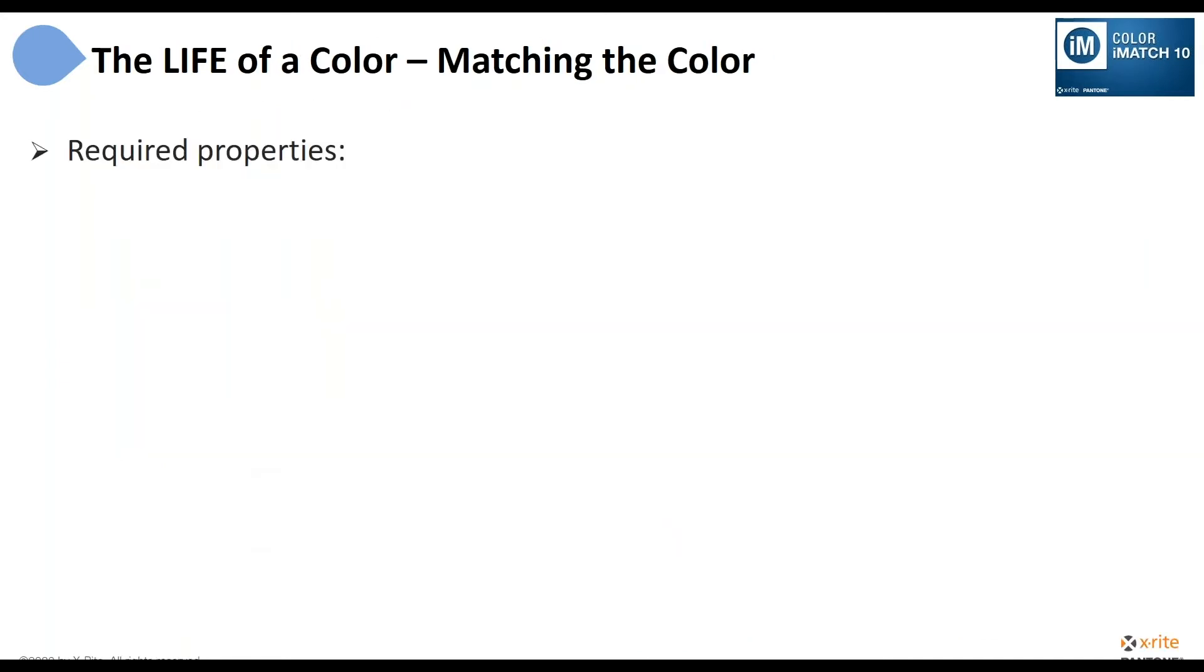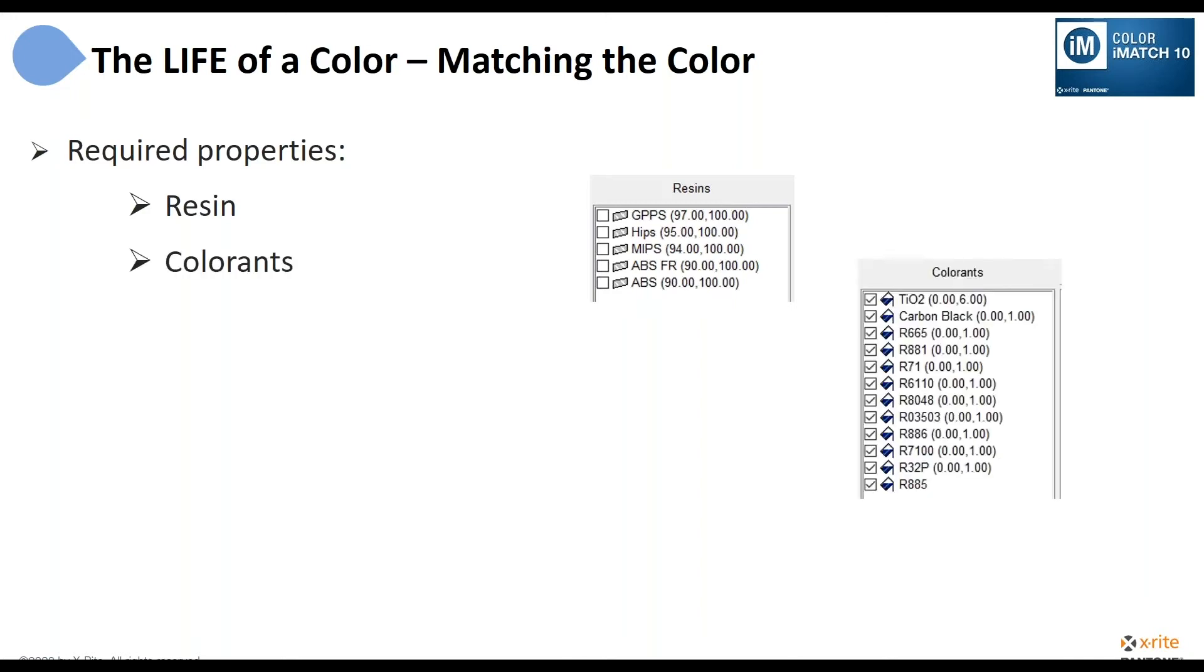So when we get into matching the color, we think about required properties. For example, if it's plastic, I've got to think about what resin I'm using. If I'm doing paint, I'd have to think about is this going to be a latex, an acrylic, an alkyd, a solvent-based paint. If it were fabric, I might think about what kind of dyes I'm using and what kind of fabric I'm using. We've got to decide about what properties are required. Those are likely specified to us, but they will contribute to our final formula. We have to think about which colorants, which mixture of things, which ingredients, coloring ingredients let's put it that way, can I make available to be used to calculate the formula or the recipe for this color.